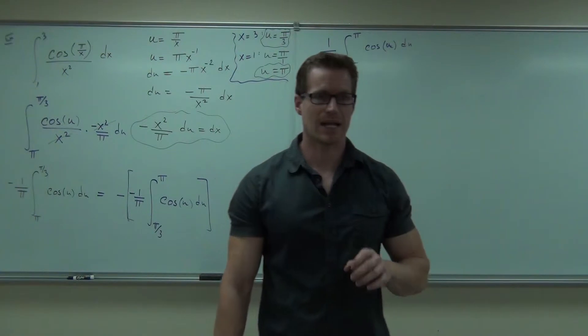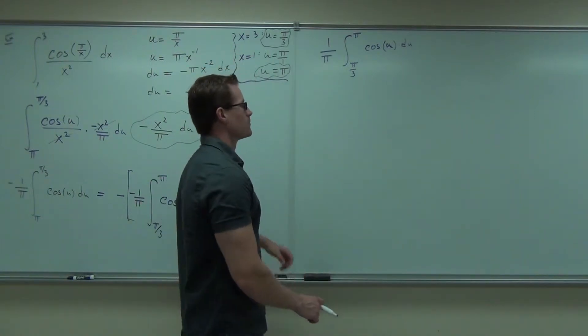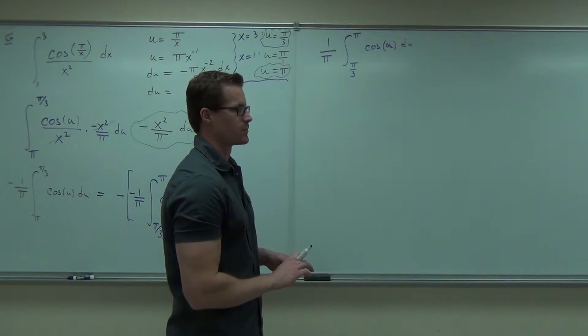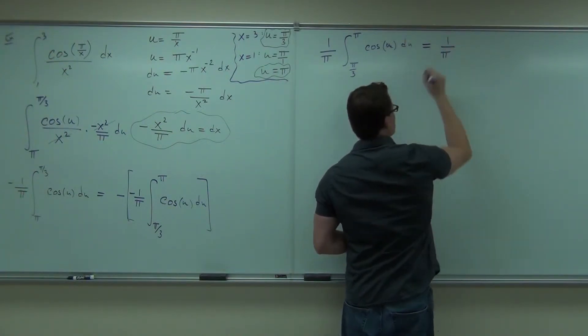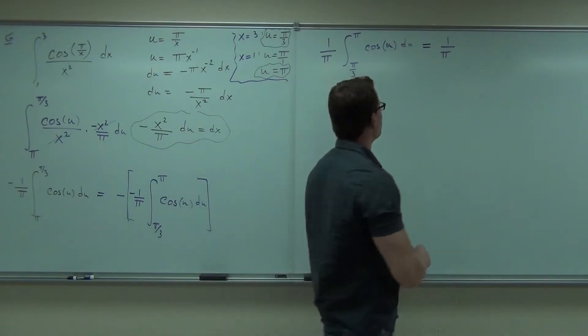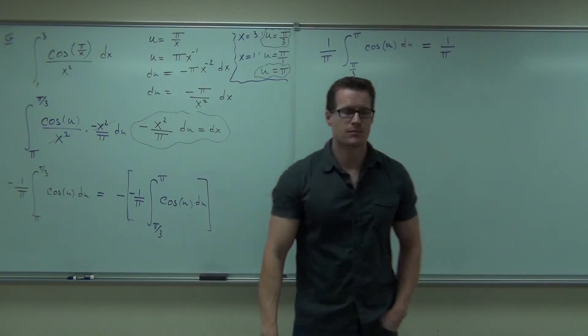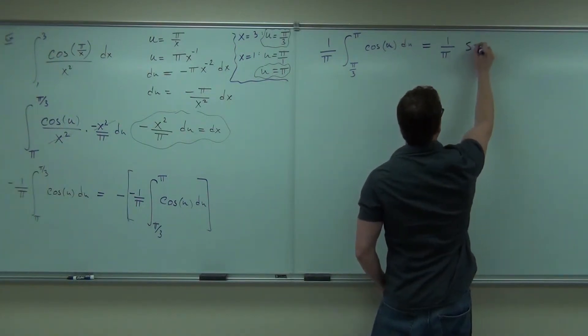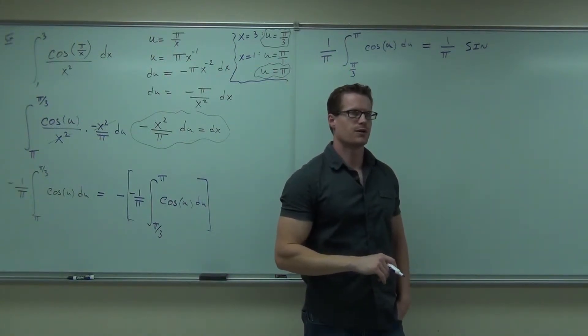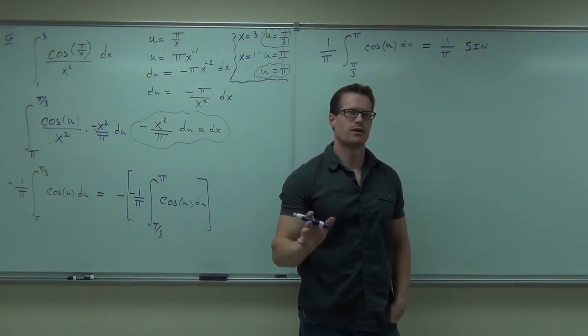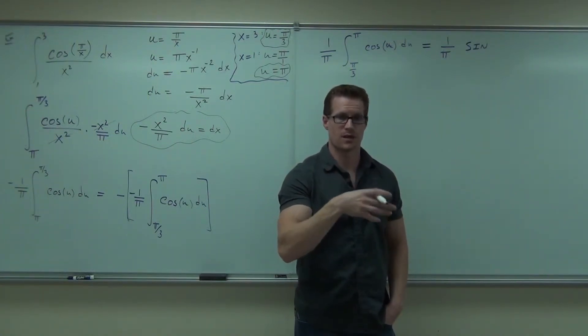What I'd like you to do right now, would you go ahead and do the integral? Go ahead and evaluate it the way that we've written it. Don't forget about that one over π out in front. Remember it's positive now. The integral of cosine, sine or negative sine? Sine. That would change your problem, right? Remember that the derivative of sine is positive cosine. So the integral of positive cosine is positive sine.